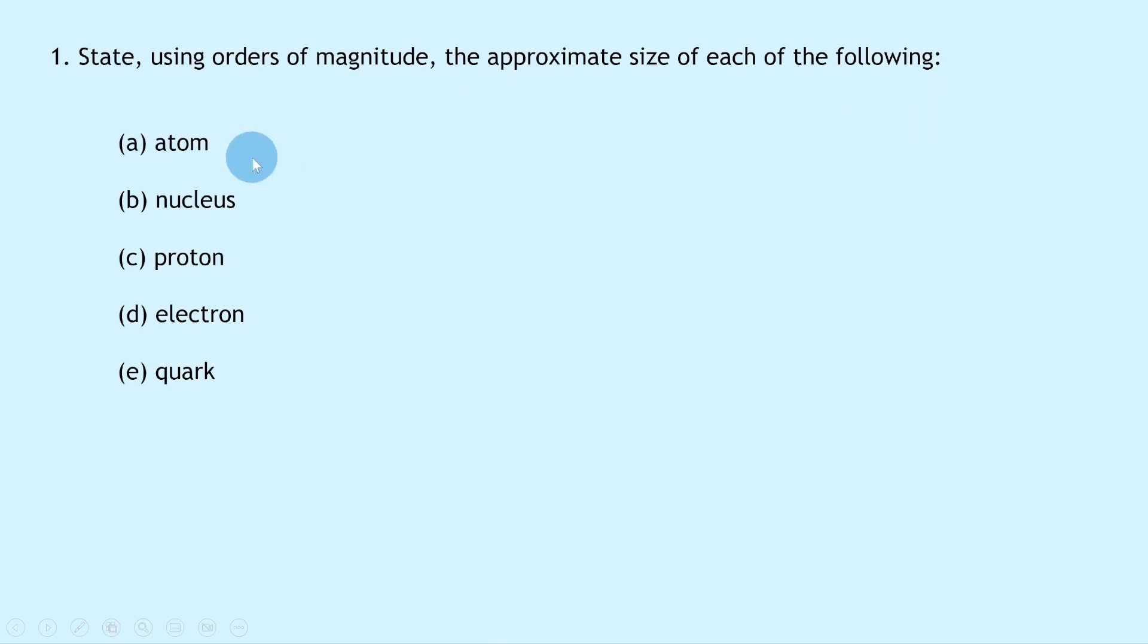Remember, orders of magnitude just means powers of 10. So from the notes we saw that the size of the atom was roughly 10 to the minus 10 meters, the size of the nucleus is roughly 10 to the minus 14 meters, even smaller, and then getting even smaller we have the size of the proton at about 10 to the minus 15 meters.